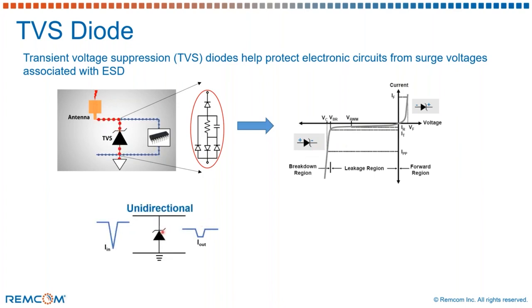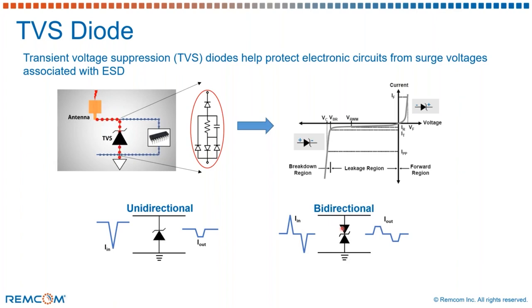In case of a unidirectional diode, the way it is laid right now, it would actually chop off the negative transients. And in case of a bidirectional diode, it would clamp both the positive and negative transients.